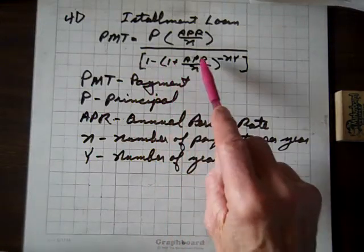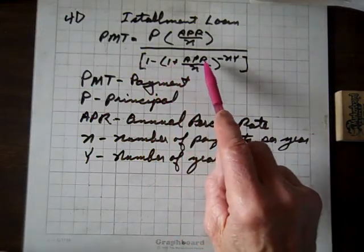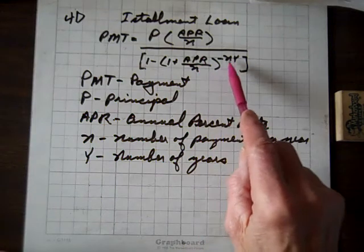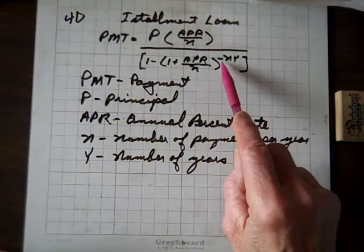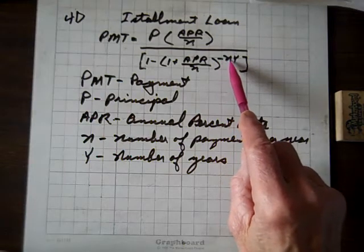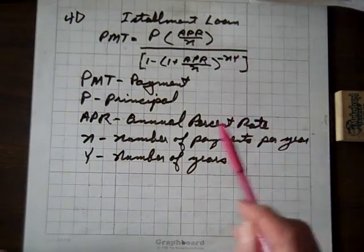1 minus parentheses, 1 plus APR over N, parentheses, and raised to the power of negative number of payments times the number of years.